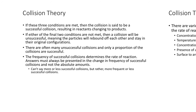When all three conditions are met, the collision is said to be a successful collision, resulting in the reactants changing into products. If either of the final two conditions are not met, the collision will be unsuccessful — the particles will just bounce off each other and stay in their original configurations. If they are successful, they break apart and form new things.